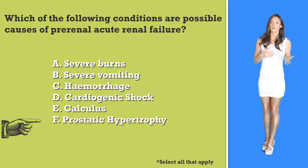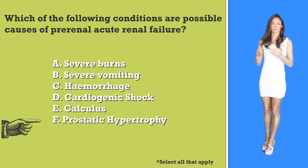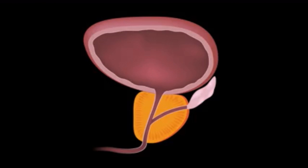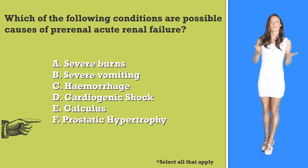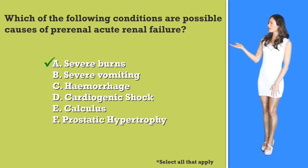Option F, prostatic hypertrophy: this option is a little more difficult because they try to trick you by leaving out the word benign — you usually see these together as BPH, or benign prostatic hyperplasia. This condition can cause blockage of the ureters due to overgrowth of prostate tissue, but this would be post-renal, not pre-renal.